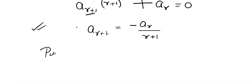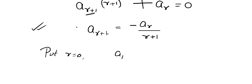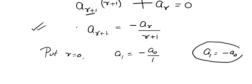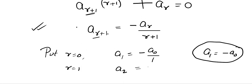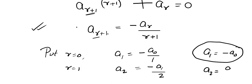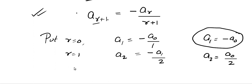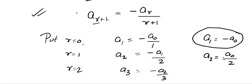Now what we do is we will put r equal to 0. When I put r equal to 0, I get a1 equal to minus a0 by (0 plus 1), that is 1 — so a1 equal to minus a0. Now I will put r equal to 1: I get a2 equal to minus a1 by 2. And that means a2 equal to — since a1 is minus a0, minus times minus will be positive — so a0 by 2. Now I put r equal to 2: I get a3 equal to minus a2 by 3. Plugging in, a3 becomes a0 by 2 times 3.